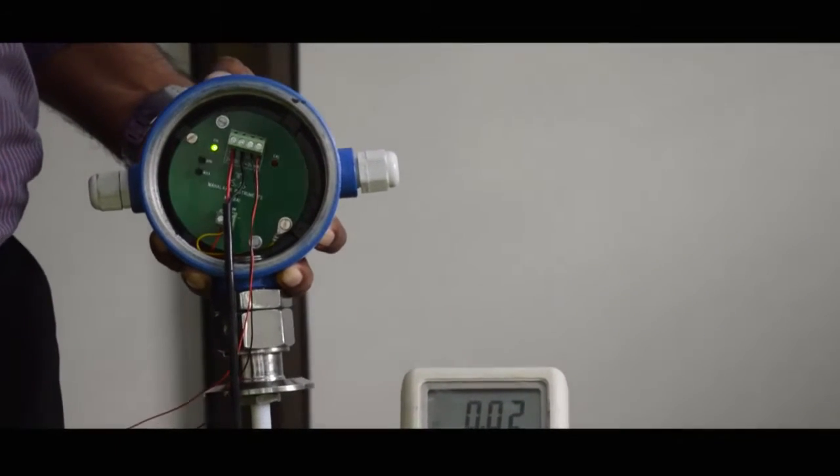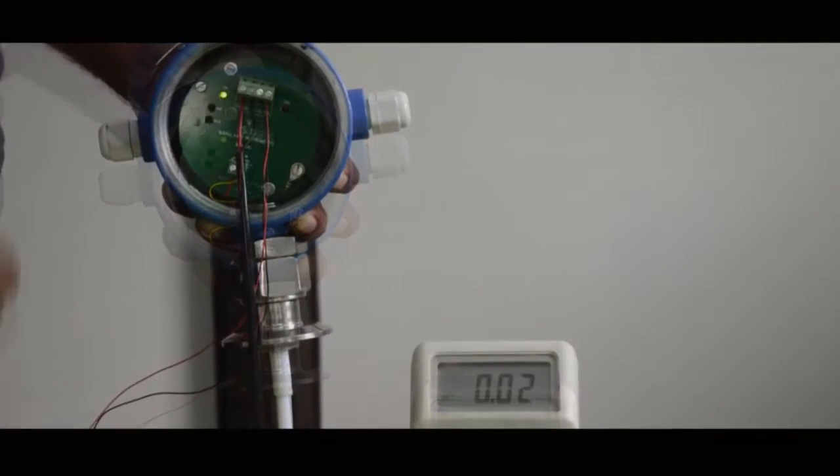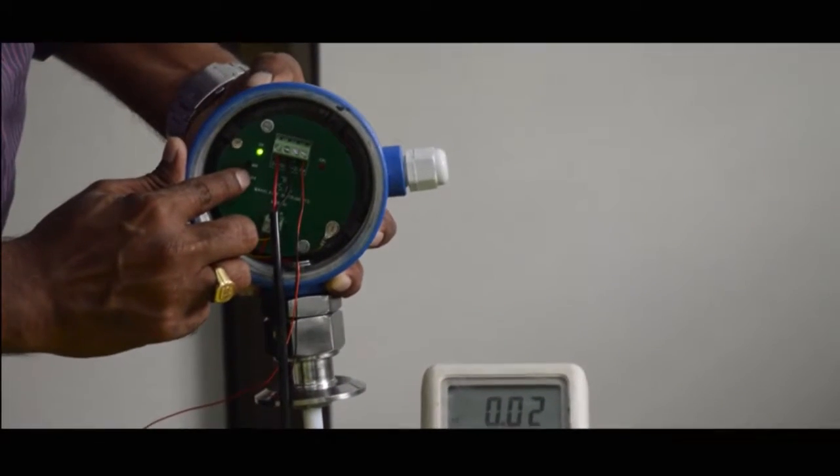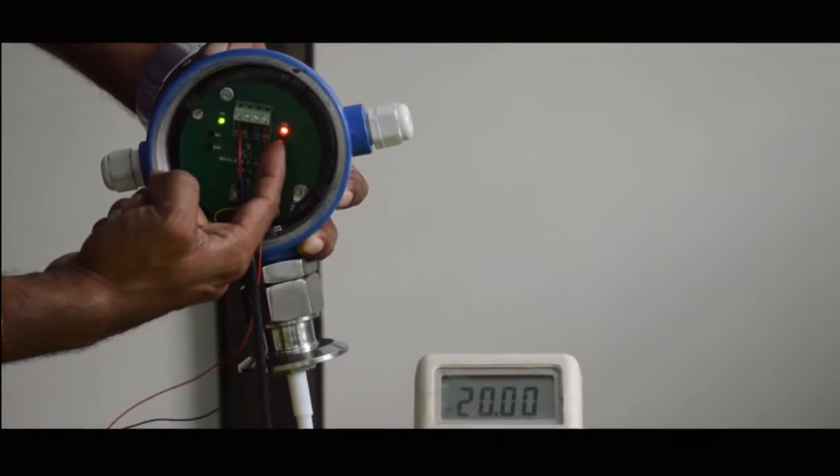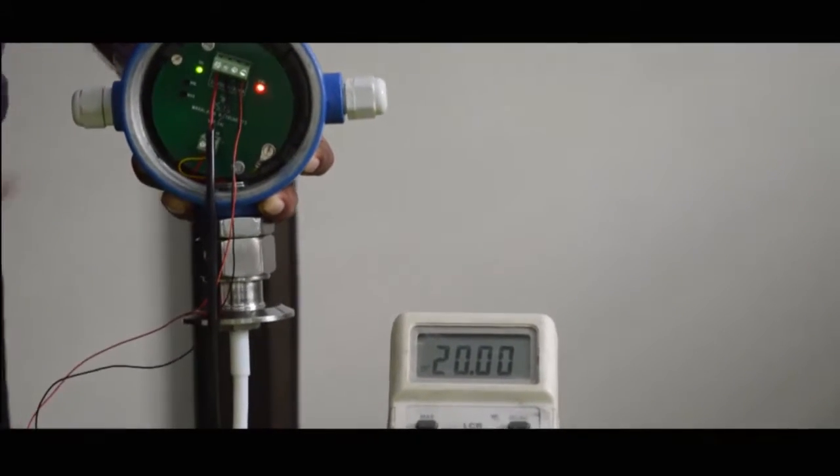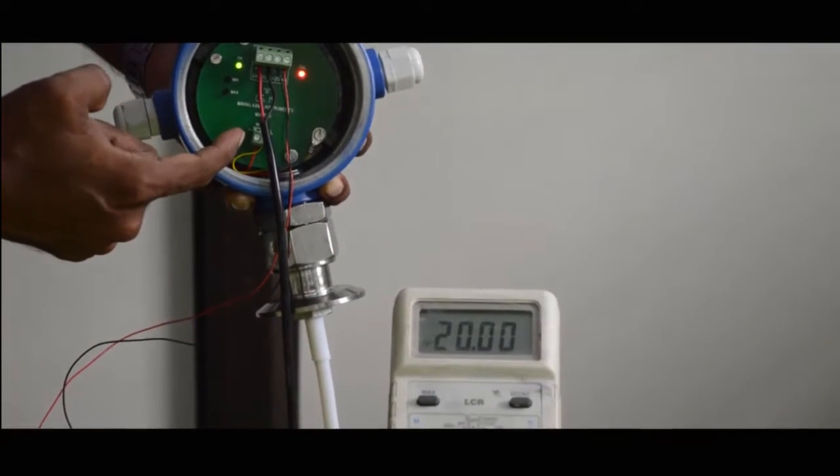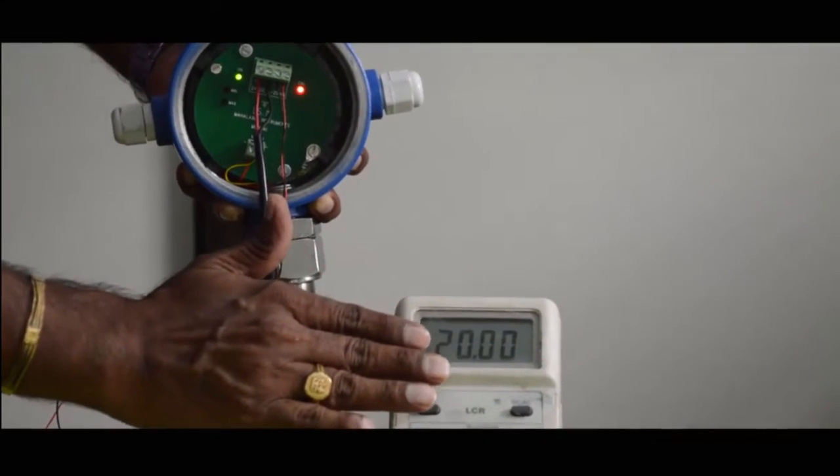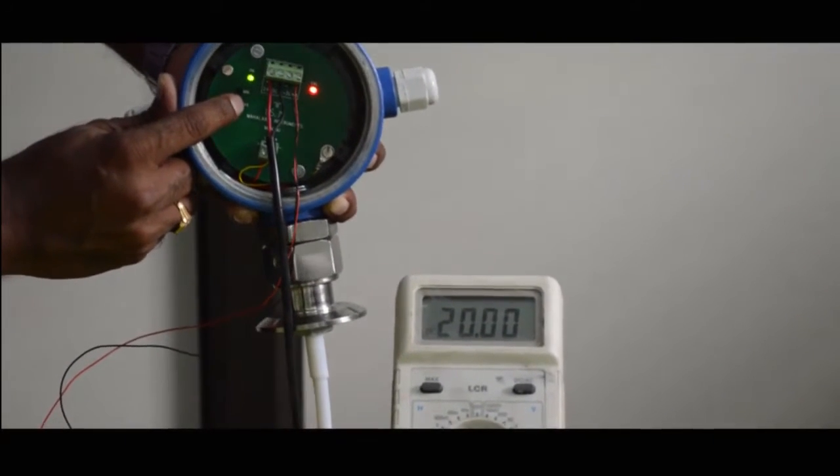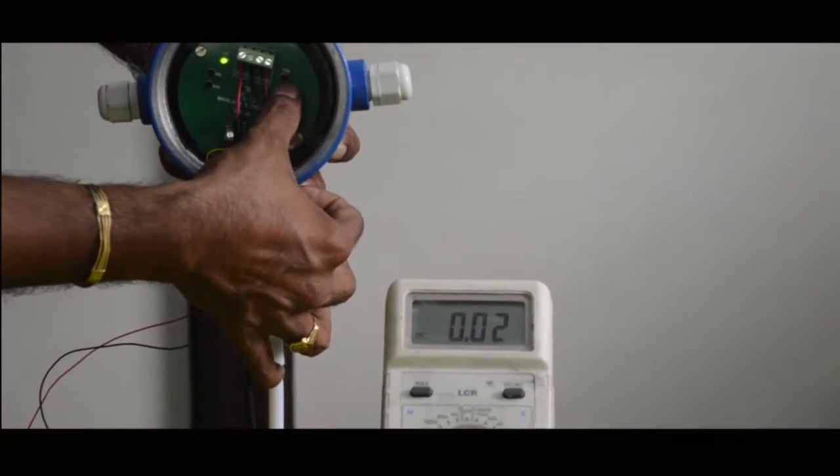Now we have completed 4 milliampere calibration. Now we will check if our card is giving 20 milliampere output or not. For this, we will press maximum for three seconds. After pressing maximum for 3 seconds, the calibration LED starts blinking and our multimeter is showing perfectly 20. Similarly, if we want to increase or decrease the value, we can use upper button or lower button to increase and decrease the value. Once your value is set, press the maximum button again and hold for 3 seconds, and you will come out of the calibration mode and the calibration LED blinking will stop.